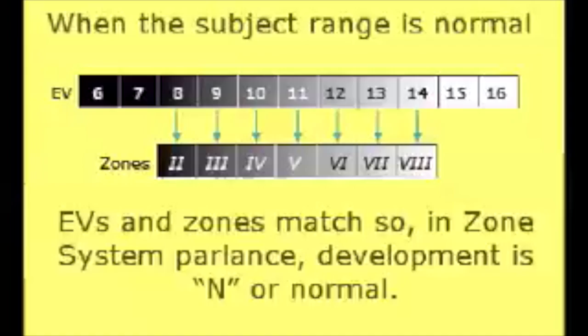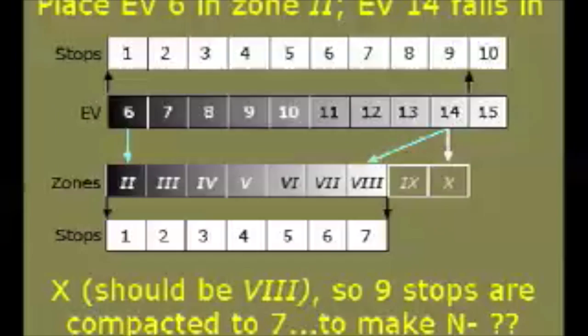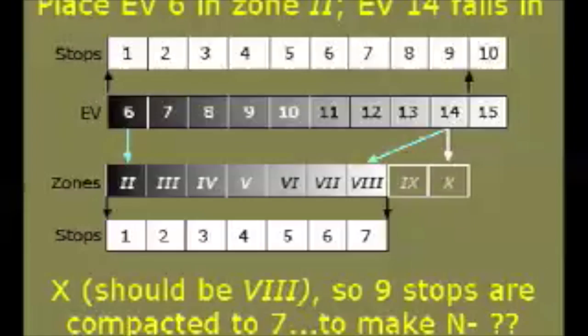When the subject range is normal — that is, when stops and zones are equal — development is considered to be normal, or N. The actual developing time represented by N is determined traditionally by a series of empirical tests. If the subject range is greater than normal, that is, greater than seven stops, it must be compacted by reduced development. In this example, a nine-stop range is compacted to seven, requiring N-minus development — in this case it could be called N-minus-2.